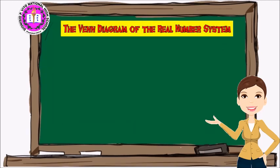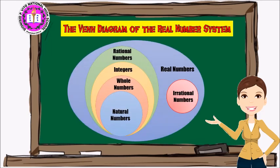Now let's have the Venn diagram of the real number system. Real numbers have subsets which are irrational and rational numbers. Rational numbers have their own subset which is integers. Integers have their own subset which is whole numbers, and whole numbers have their own subset which is natural numbers.